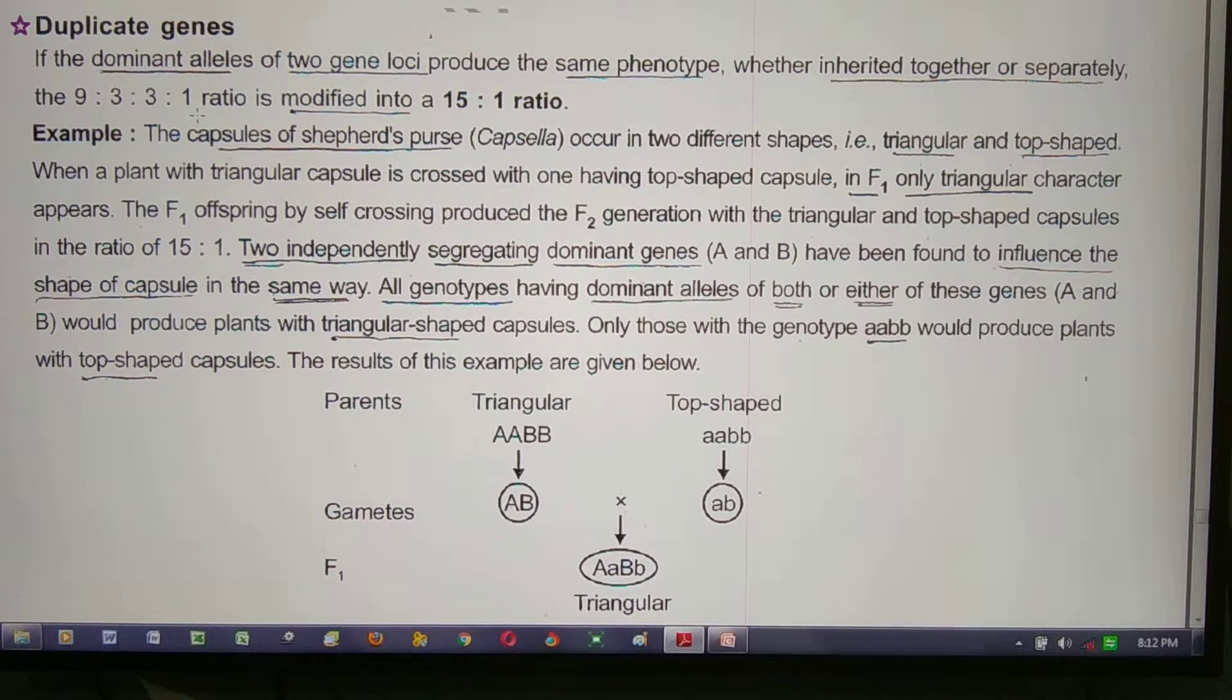The 9 to 3 to 3 to 1 ratio changes to 15 to 1. The capsule of shepherd's purse occurs in two different shapes: triangular and top-shaped.